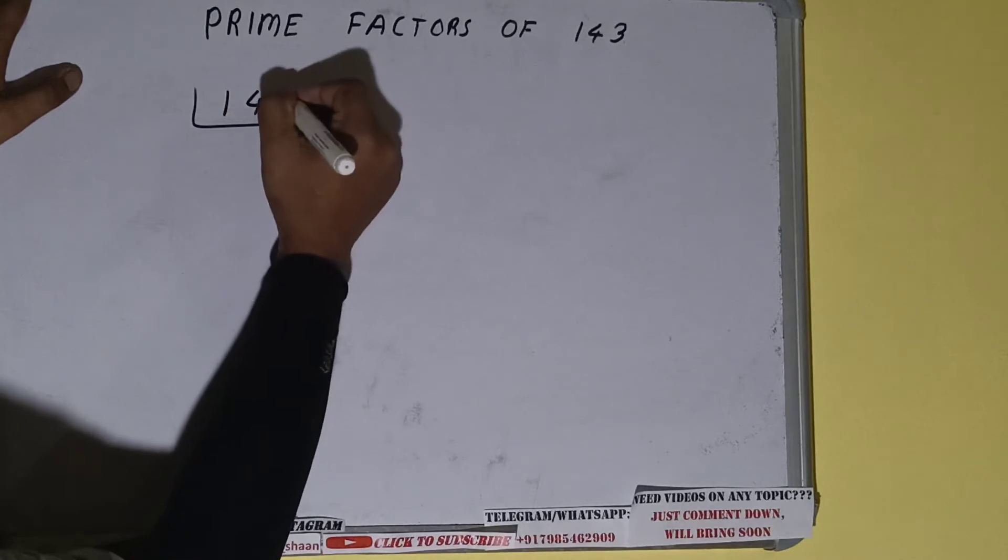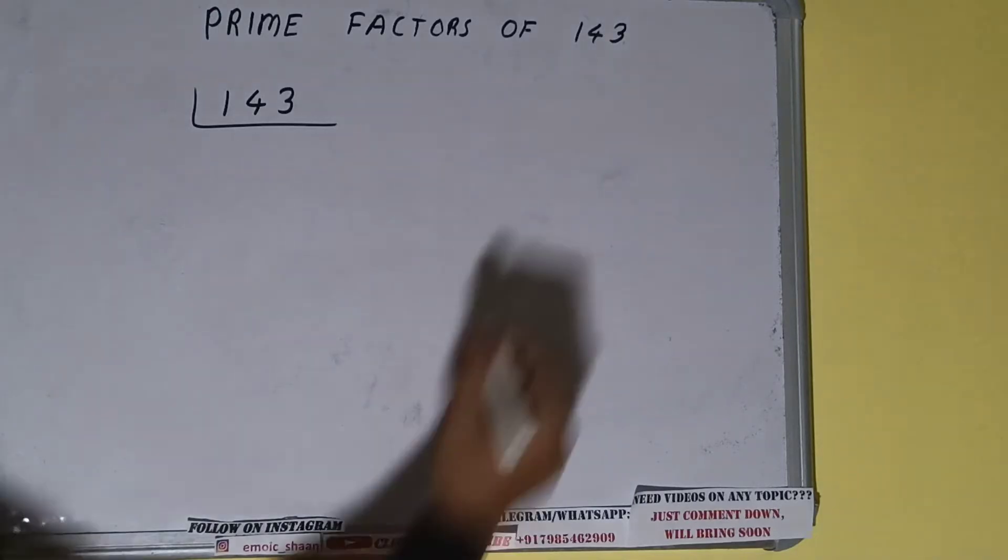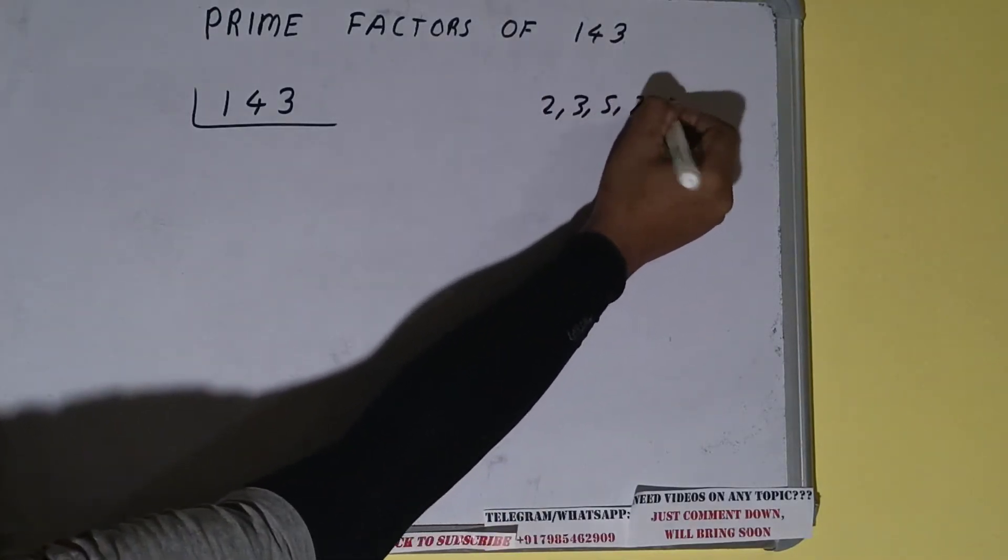The next thing we need to know about is what are prime numbers. Prime numbers are numbers that are divisible by 1 and the number itself, like 2, 3, 5, 7, and so on. Alright.